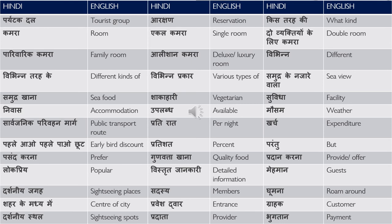लोकप्रिय — popular. As I said, it's a very important word. विस्तृत जानकारी — detailed information. मेहमान — guest. दर्शनीय जगहें — sightseeing places. सदस्य — members. घूमना — roam around. घूमने जाना चाहता हूं — I want to go roam around.